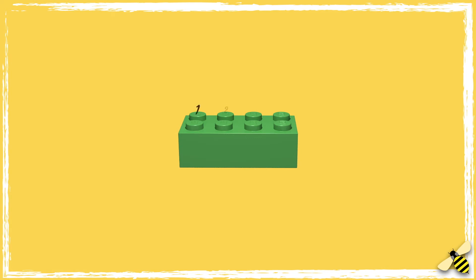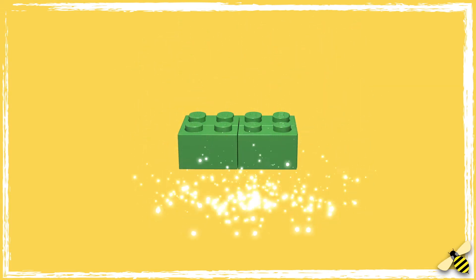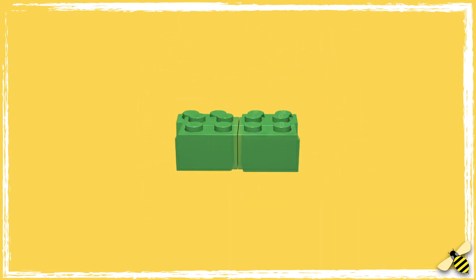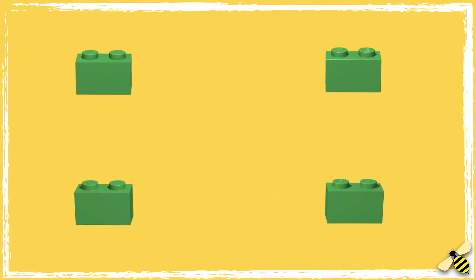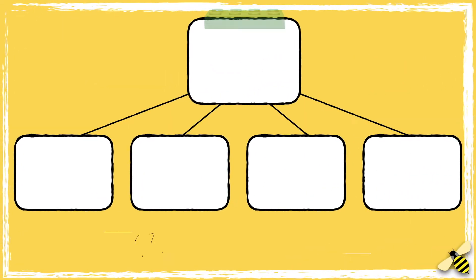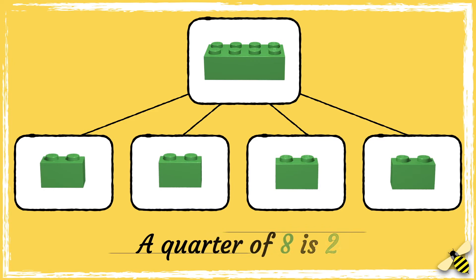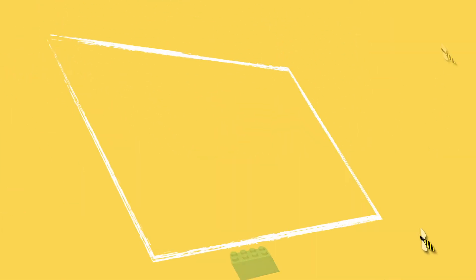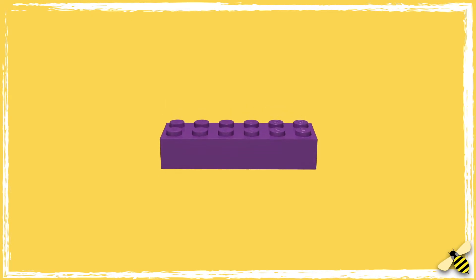Let's have a look at another brick. This brick has eight studs. Let's try splitting this brick into quarters. We now have four pieces. There are two studs in each quarter, so a quarter of eight is two.